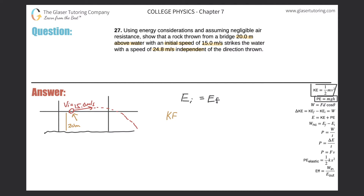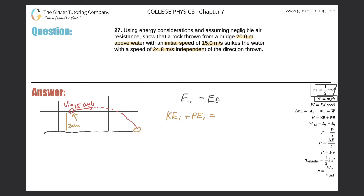Expanding the initial energy, we have some initial kinetic energy and some initial potential energy, and that equals the final energy of the system. After the rock comes down and hits the water, all the potential energy is gone — there's no height associated with it. So at the final point, all we have is kinetic energy final.